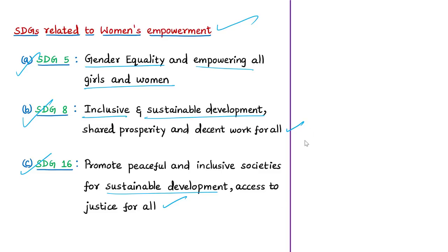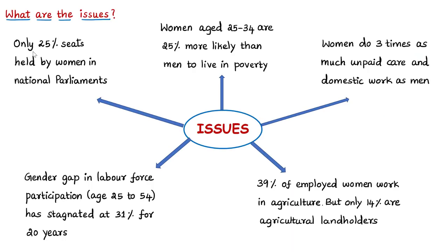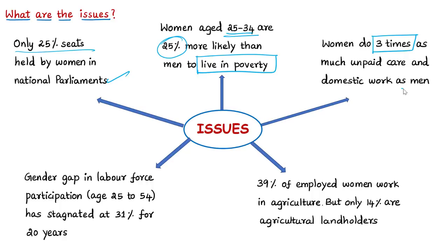According to this report, changes over the last 25 years in political, social, economic, and environmental spheres have brought some welcome steps for women and girls, but there have also been reversals. Poverty, discrimination, and violence are still strongly present in the lives of women. The report highlights the under-representation of women in power and decision-making: only 25% of seats are held by women in national parliaments, and women aged 25-34 are 25% more likely to live in extreme poverty than men.